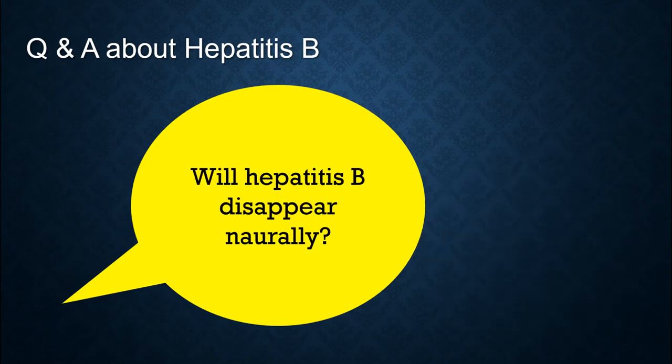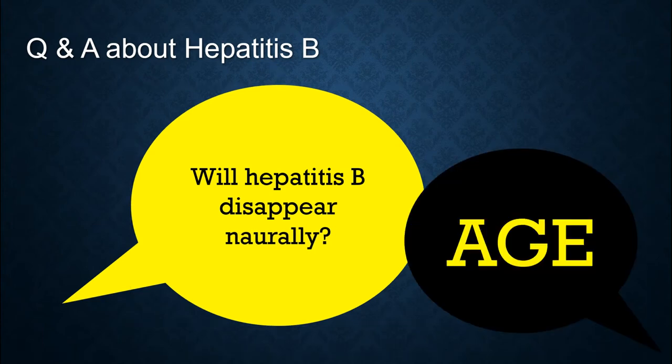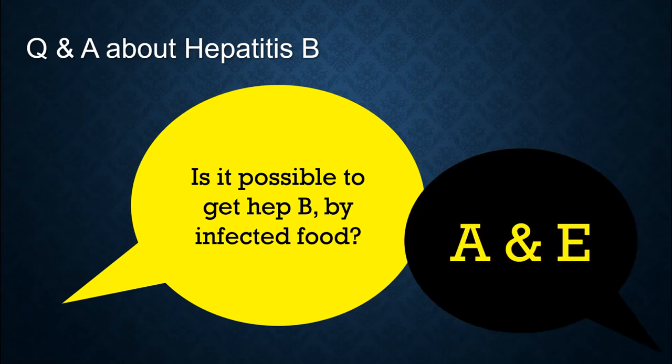Will hepatitis B resolve naturally? The answer depends on the age. 90% of adults will cure naturally and only 10% will become chronic. Adults will have a negative surface antigen and antibodies within six months, meaning the adult is cured. However, in contrast, 90% of infants will develop into chronic hepatitis B infection. Is it possible to get hepatitis B from infected food? In that case, it would be hepatitis A and E, not B.